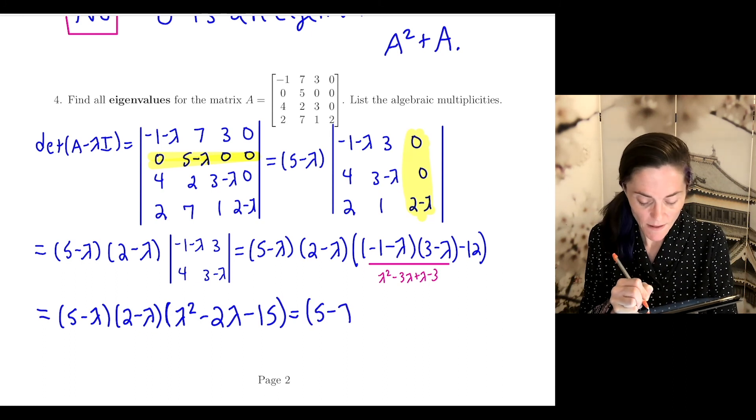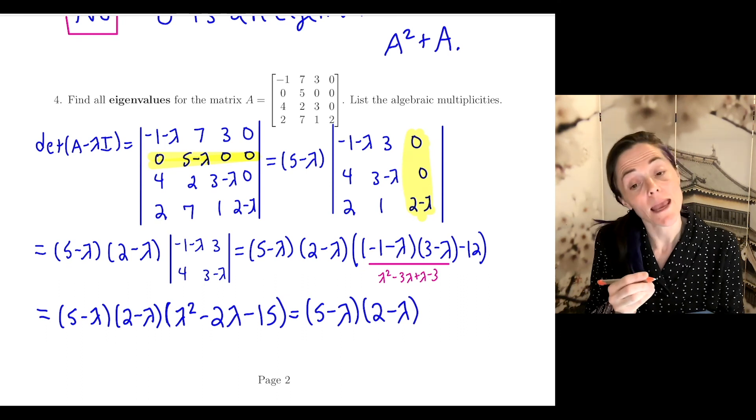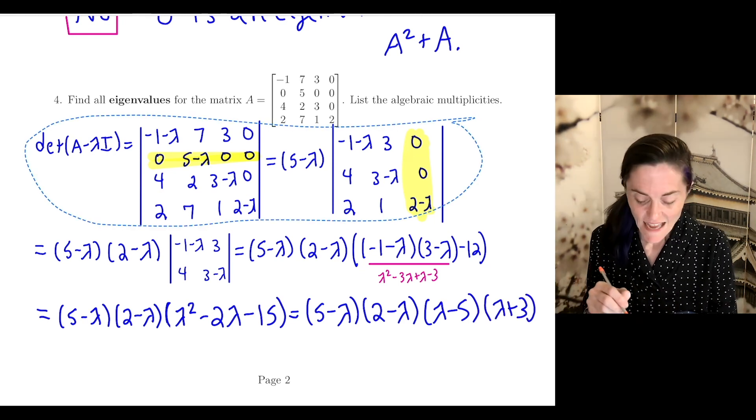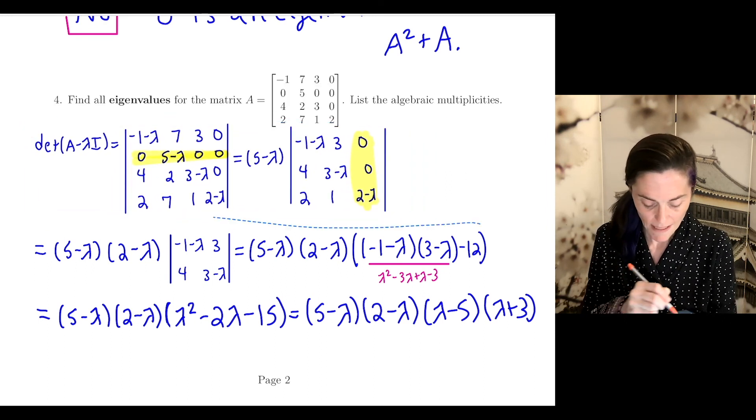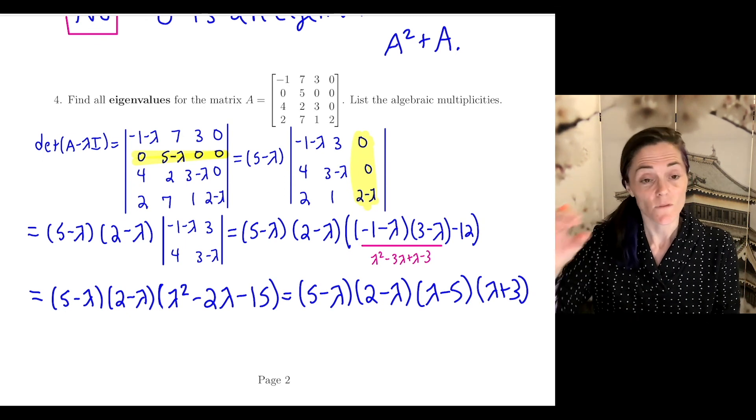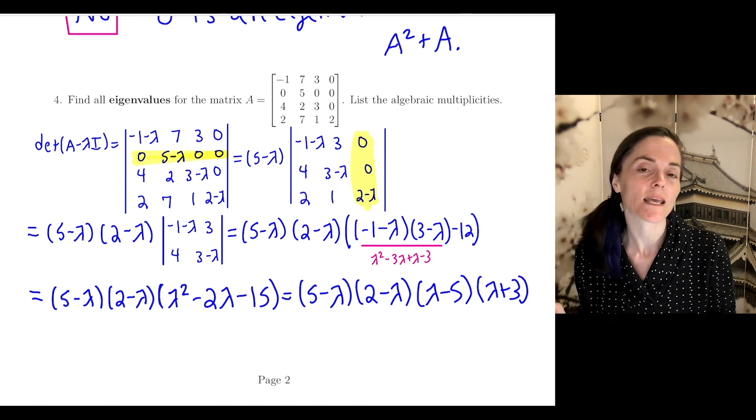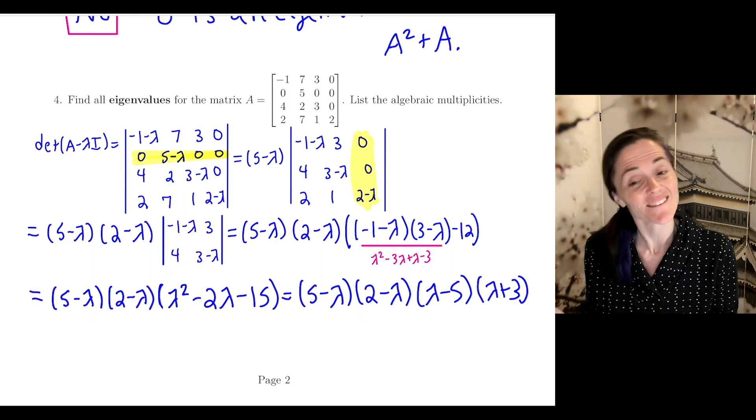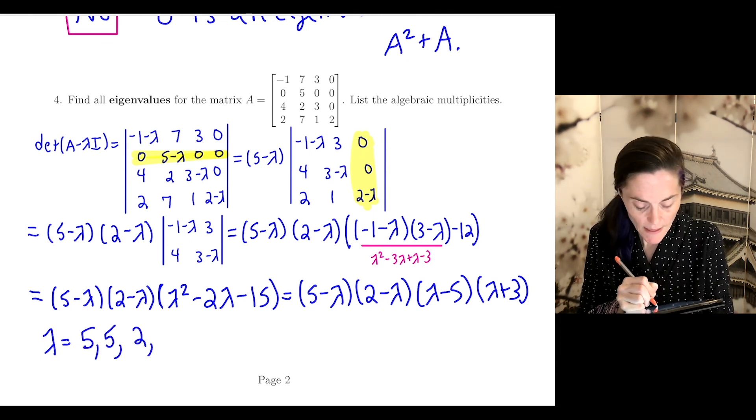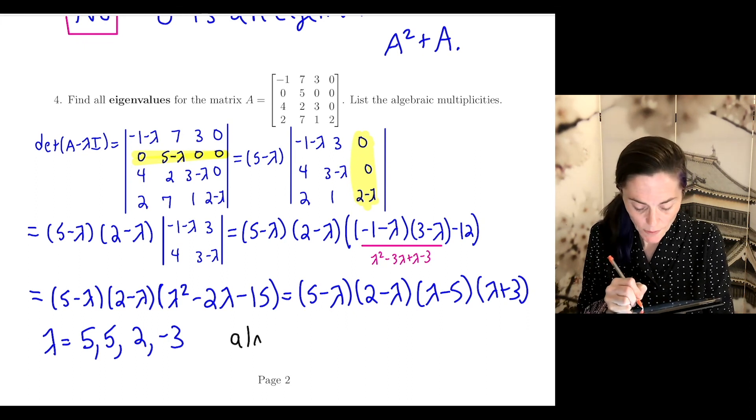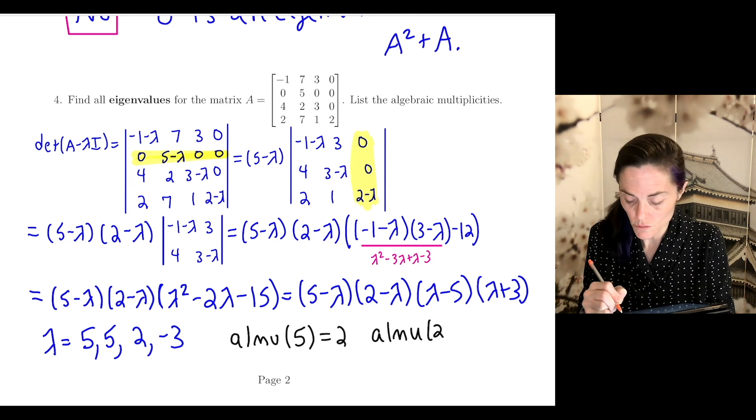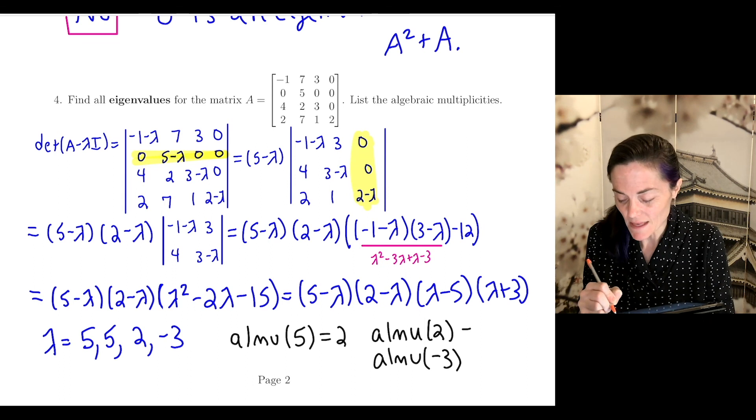One more step: we have (5 - λ), (2 - λ), and then what's remaining. You see it factors. We have (λ - 5) and (λ + 3). Now we are ready to answer this question. The eigenvalues of this matrix are the roots of this polynomial. We have lambda equals 5 is repeated, then we have 2 and negative 3. The algebraic multiplicity of eigenvalue 5 is 2, and the algebraic multiplicity of 2 and of negative 3 are both 1.